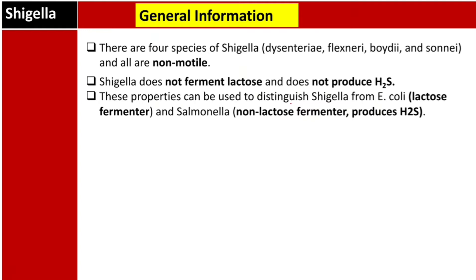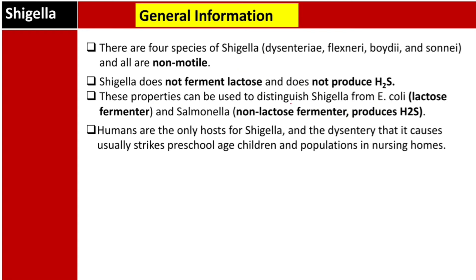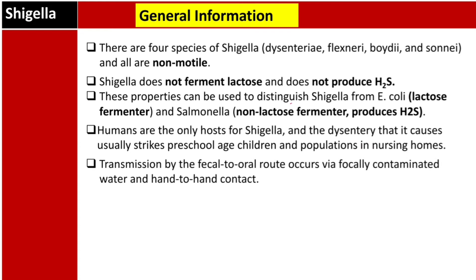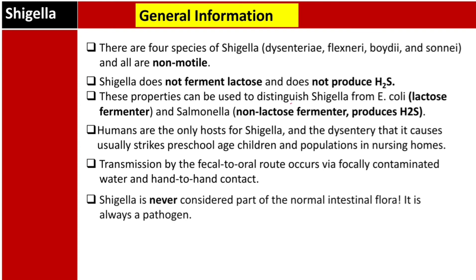To differentiate: E. coli ferments lactose but Shigella doesn't. Salmonella is a non-lactose fermenter like Shigella, but Salmonella produces hydrogen sulfide. Humans are the only hosts for Shigella, and the dysentery it causes usually strikes preschool-age children and populations in nursing homes. Transmission is through the fecal-oral route via fecal-contaminated water and hand-to-hand contact. Shigella is never considered part of normal intestinal flora — it is always pathogenic.